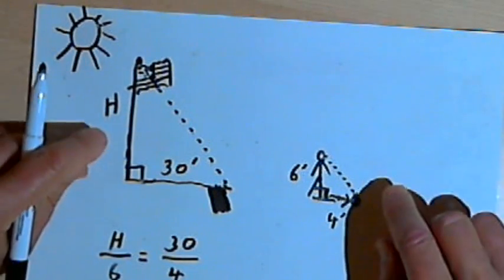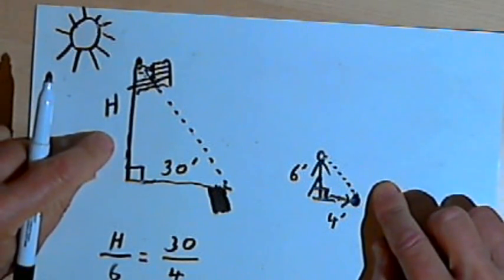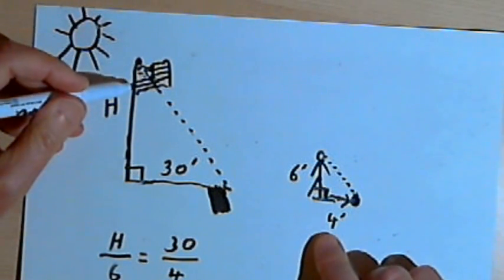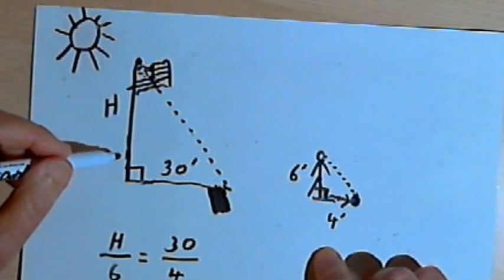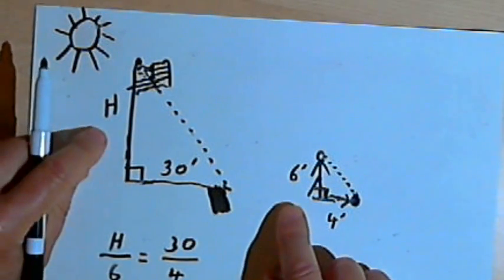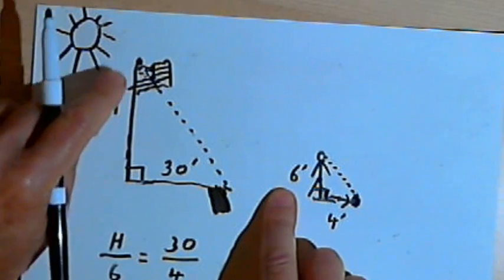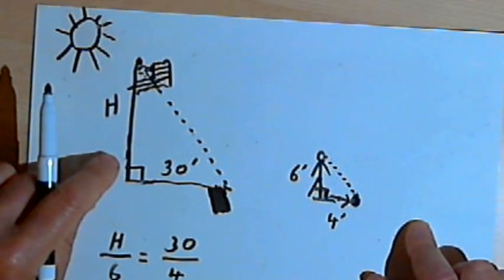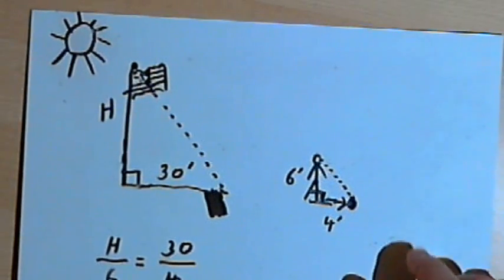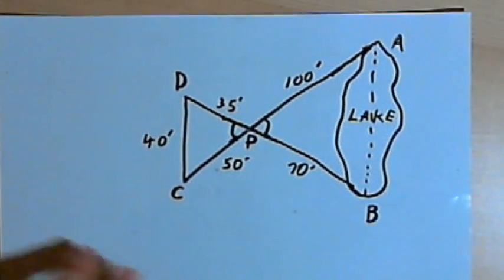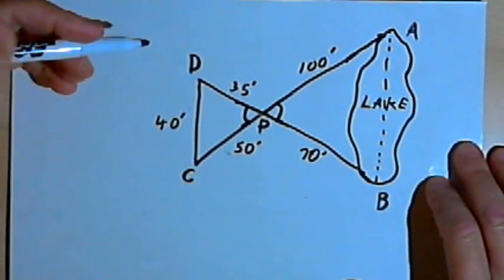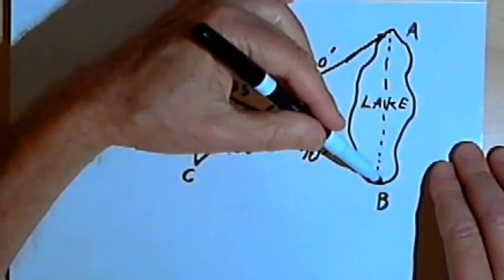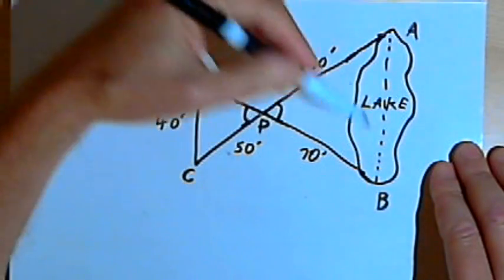So once again, I showed that these two triangles were similar by showing angle-angle similarity. Once I've got the fact that they're similar, I can find the length of a missing side by using the fact that the sides are proportional. Here's another kind of problem — this kind involves a lake, and you're trying to find out the length of the lake from one end to the other without actually getting into the water.